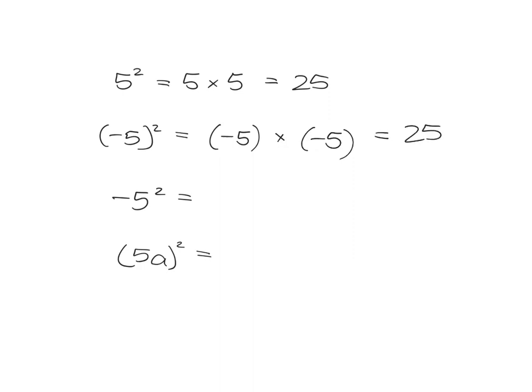In this case, it's just the 5 that's under the influence of the 2. So the negative doesn't get repeated. So we get negative 5 times 5, which is negative 25.